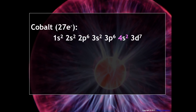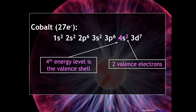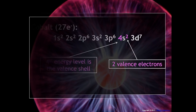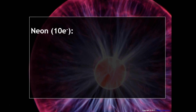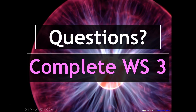For cobalt, the highest-numbered energy level in its entire configuration is also four, so the fourth energy level is the valence shell — giving two valence electrons. For neon, you have to find the highest-numbered energy level and add those electrons together: the second energy level is the highest, and 2s2 plus 2p6 gives a total of eight valence electrons for neon. So electron configurations can give you a lot of information.